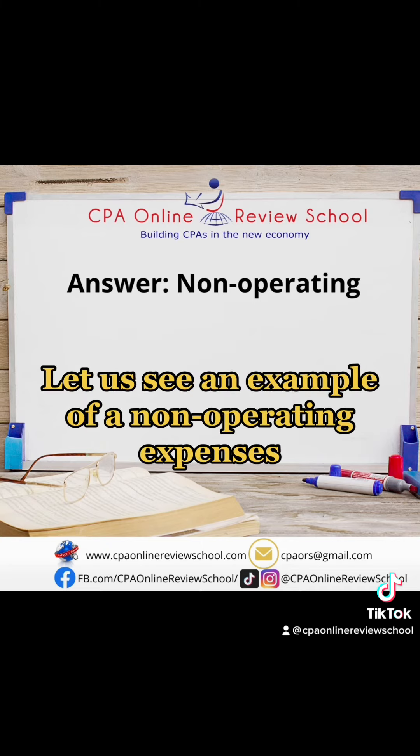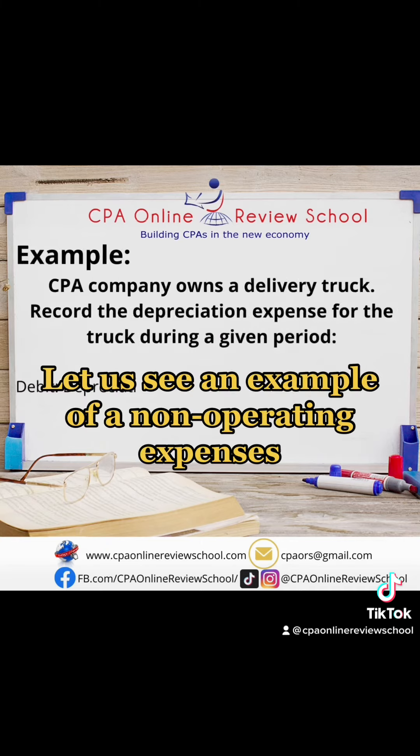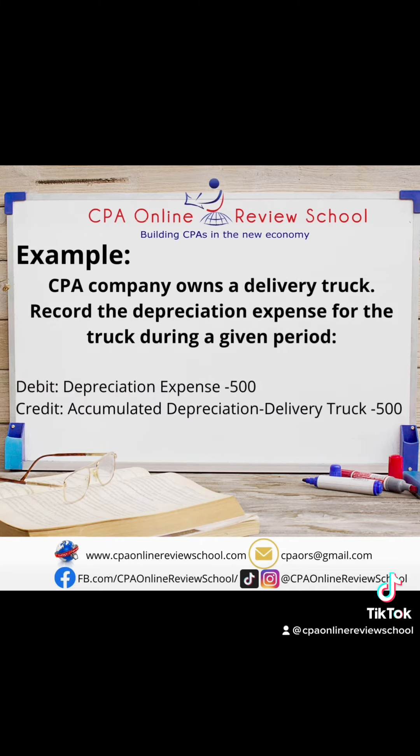Let us see an example of a non-operating expense. A CPA company owns a delivery truck during a given period. Here is the entry: Debit Depreciation Expense $500, and Credit Accumulated Depreciation — Delivery Truck $500, which is a contra asset account.